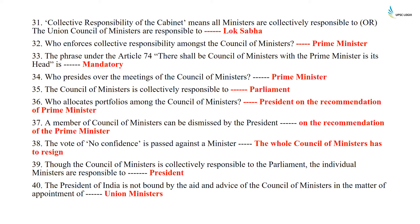Collective responsibility of the cabinet means all ministers are collectively responsible to the Lok Sabha — the union Council of Ministers is responsible to the Lok Sabha. Who enforces collective responsibility among the Council of Ministers? It is the Prime Minister. The phrase under Article 74 — 'there shall be a Council of Ministers with the Prime Minister as its head' — is mandatory. Who presides over the meeting of Council of Ministers? It is the Prime Minister. The Council of Ministers is collectively responsible to the Parliament. Who allocates portfolios among the Council of Ministers? It is the President on the recommendation of the Prime Minister.